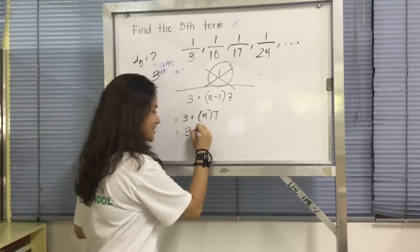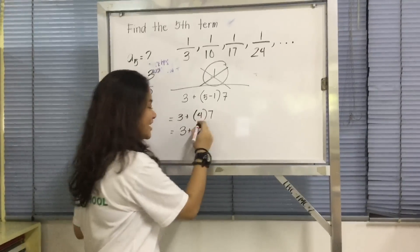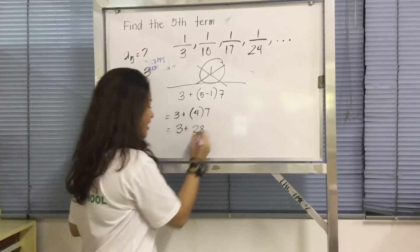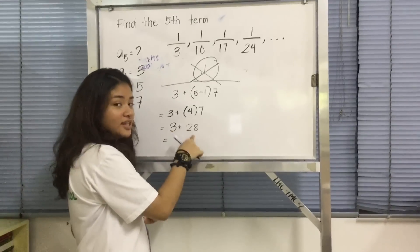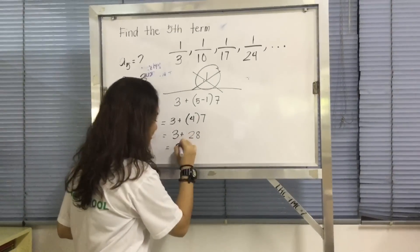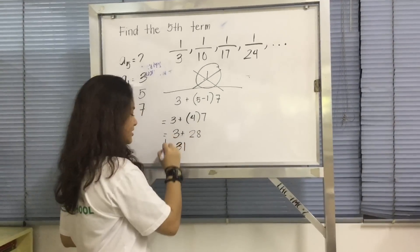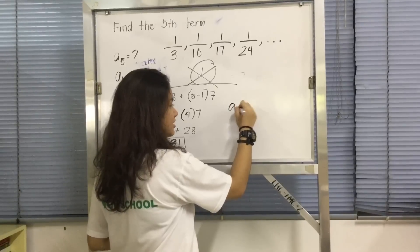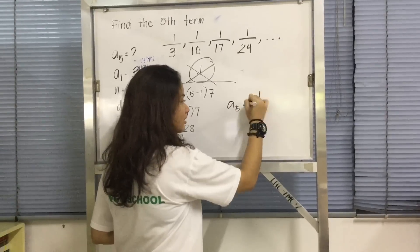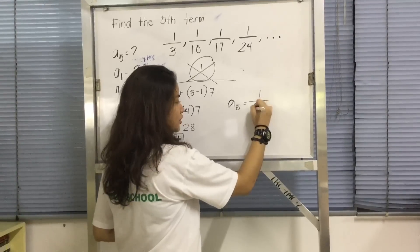3 plus 4 times 7 is 28. And for the last step, get 3 plus 28 equals 31. So this is the fifth term. Your a5 is equal to 1 over 31.